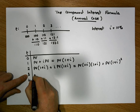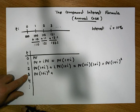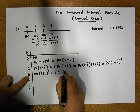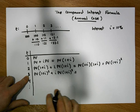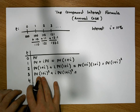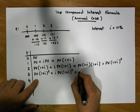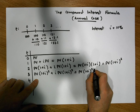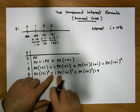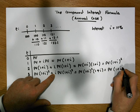Continuing, after three years has elapsed, what we should have is what we had in the previous year — PV(1 + i)² — plus an interest payment of i × PV(1 + i)². Again we have a common term PV(1 + i)² in both parts, so we factor it out: PV(1 + i)² × (1 + i), which gives us PV(1 + i) cubed.